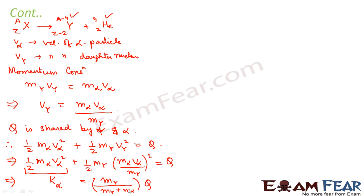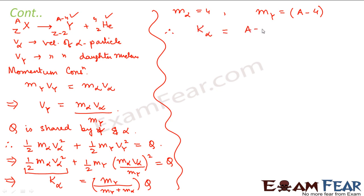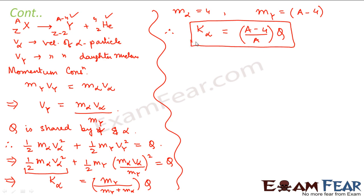If you solve this expression you get that result. For the alpha particle, M_alpha = 4 and M_Y is the mass number of the parent nucleus minus 4. Therefore, the kinetic energy of the alpha particle equals [(A − 4) / A] × Q. That is how we calculate the kinetic energy of the alpha particle in case of an alpha decay.